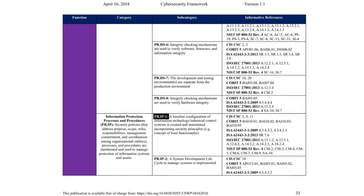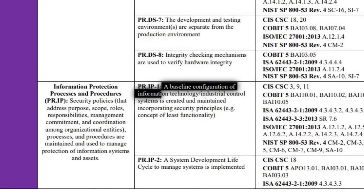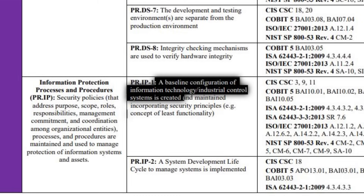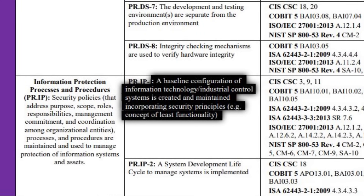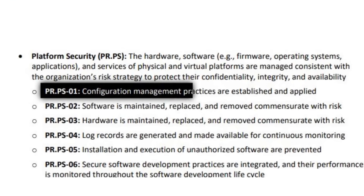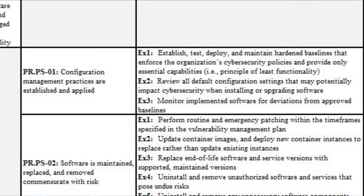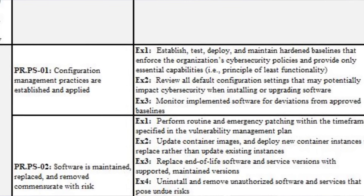For example, PR.IP-1.1 in version 1.1 read: a baseline configuration of information technology and industrial control systems is created and maintained incorporating security principles, e.g., concept of least functionality. Now the entire category of PR.IP is gone, but there's a new one called PR.PS that has absorbed parts of it. PR.PS-1 says: configuration management practices are established and applied. Simple, clean, chef's kiss. And they give implementation examples that make it even clearer on how to achieve this outcome.